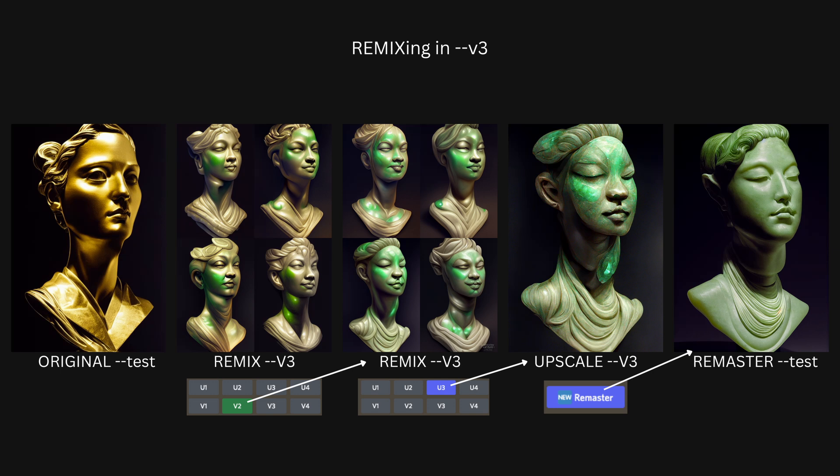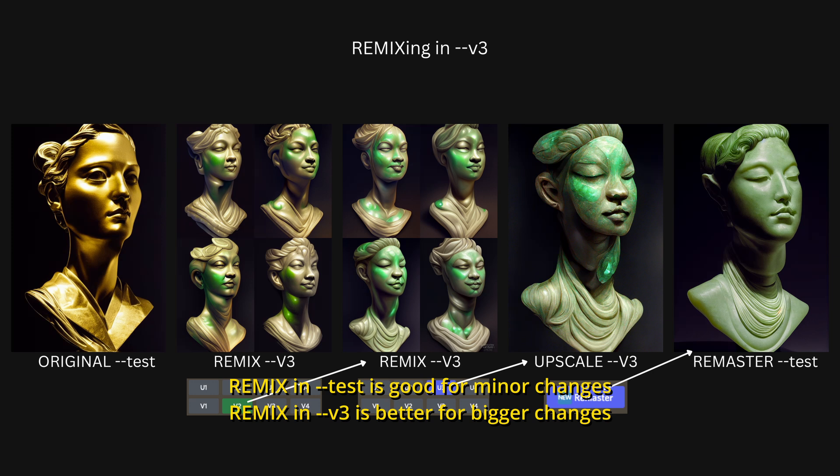Our previous Aging Man example seemed to work well in Test because the changes in composition were not so drastic, whereas here the material change was much bigger. When changing the material of the statue, Midjourney also changes the statue itself, likely because Jade statues generally come from the Far East and carry a different aesthetic. So the key takeaway is: for minor changes, remixing in Test is okay, but for more significant, drastic changes, it's best to jump into V3.